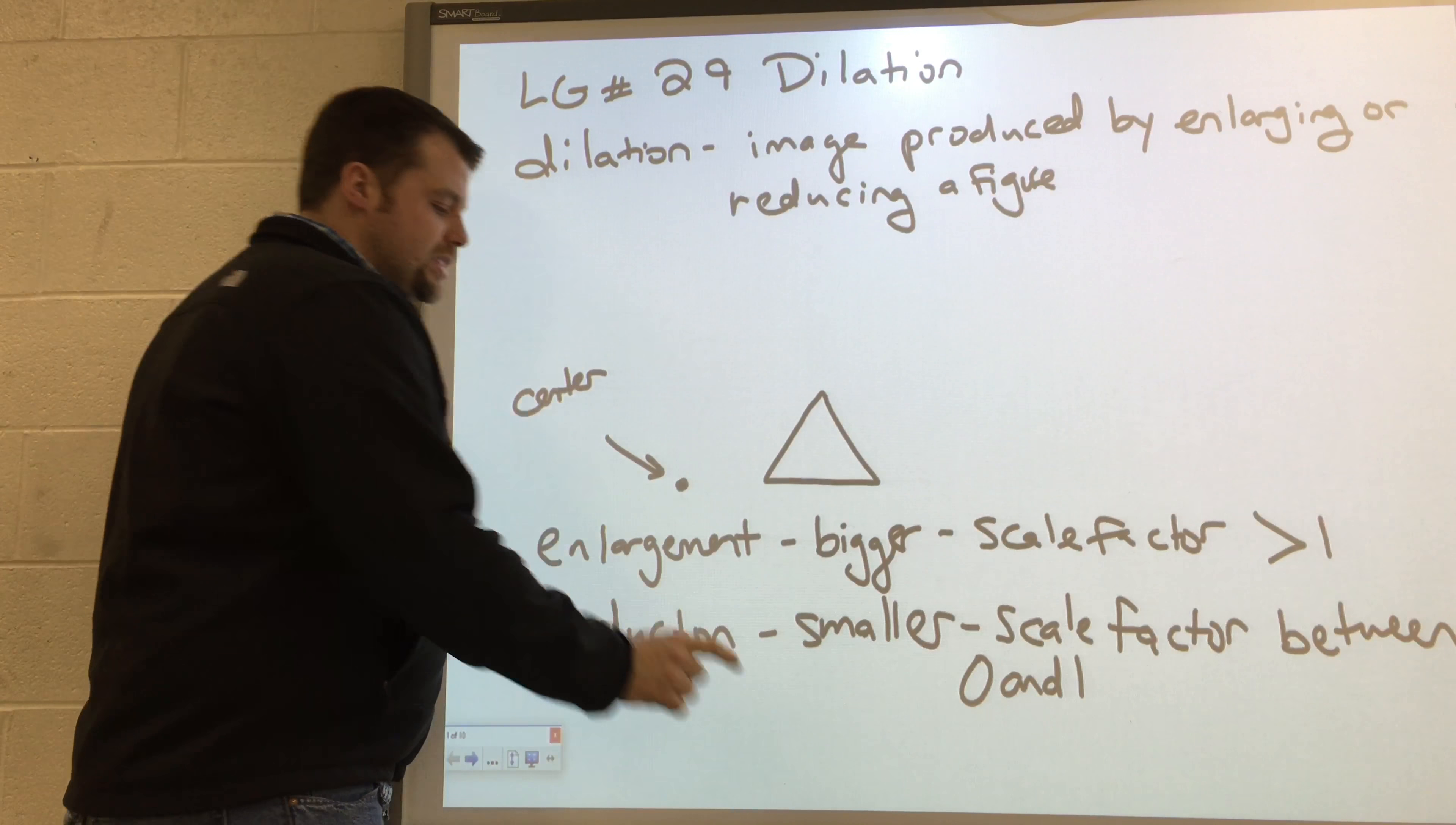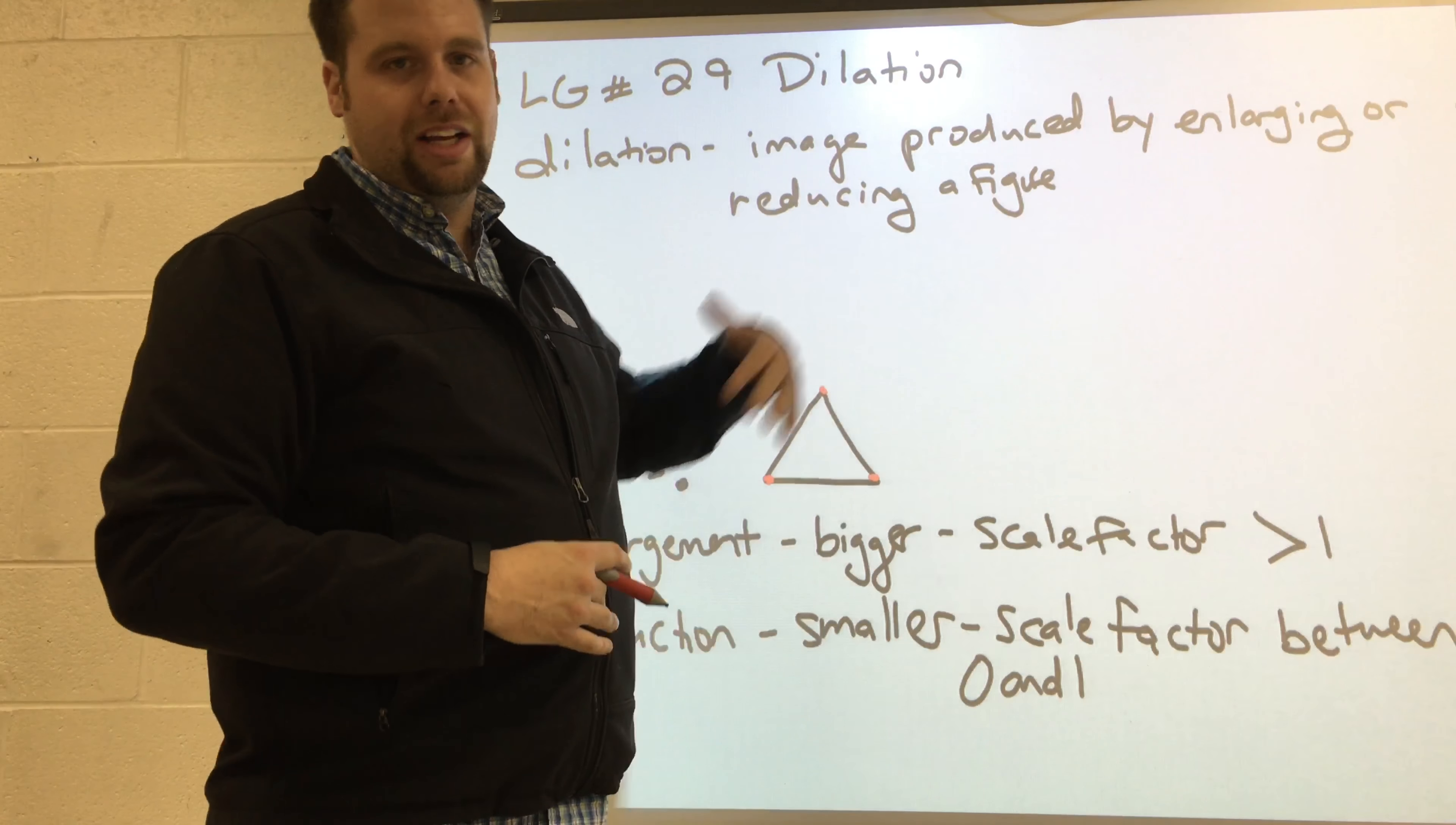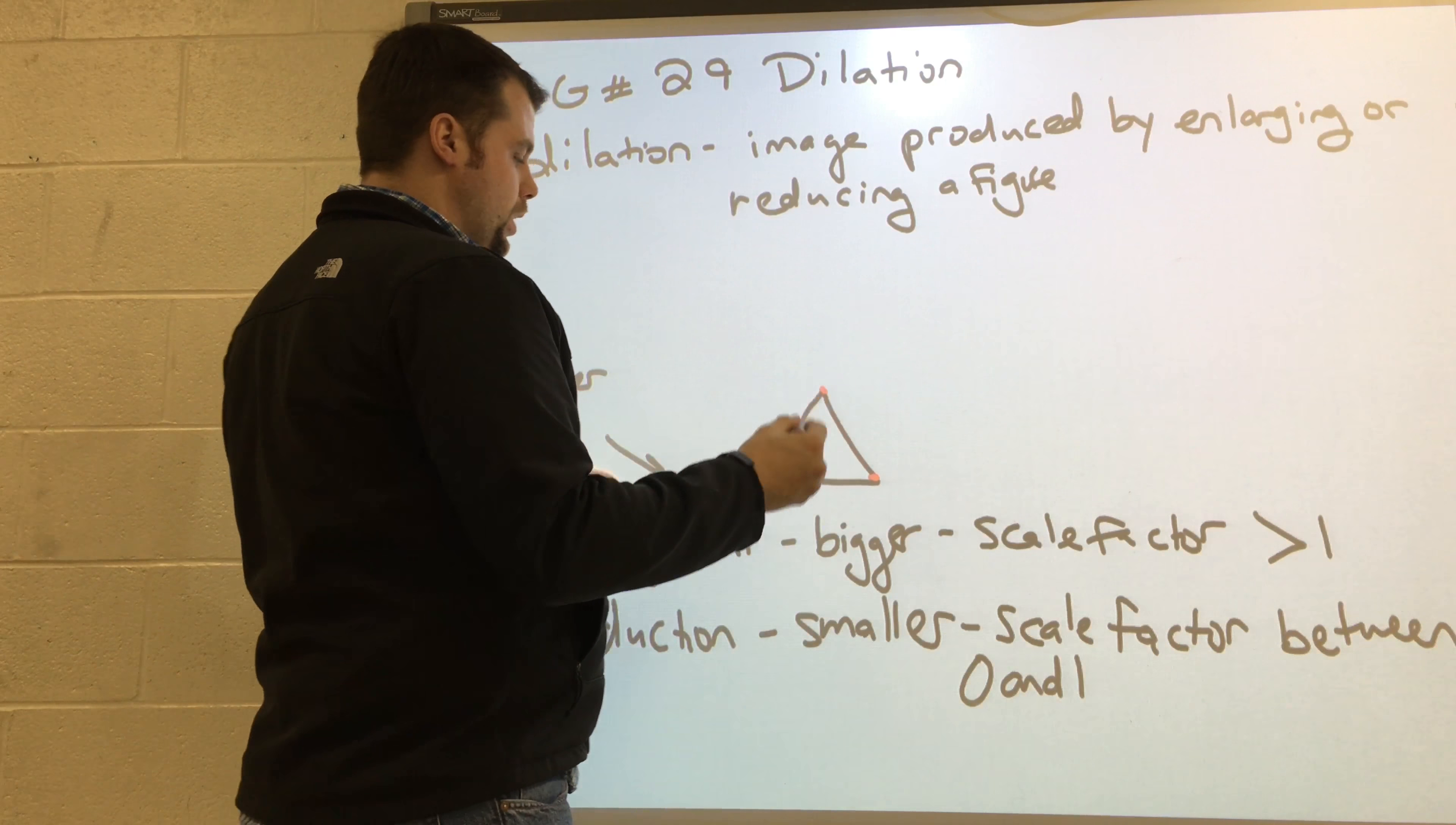Dilations have a center and basically here's what's happening. However far each point is away from the center, if I want to grow it, like say I want to double this triangle in size, I just measure the distance here and then I double it to make my new point and I double it here and so on.